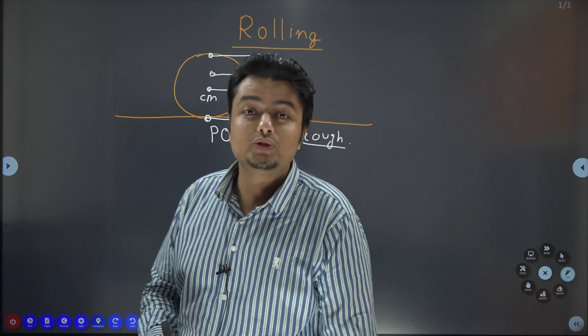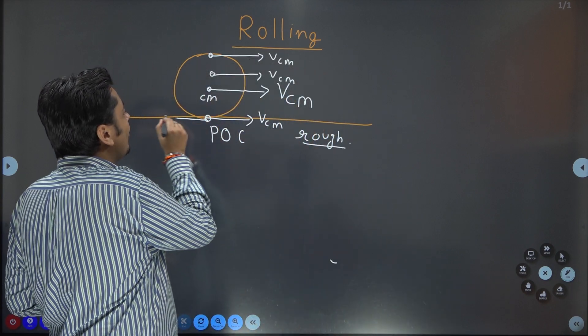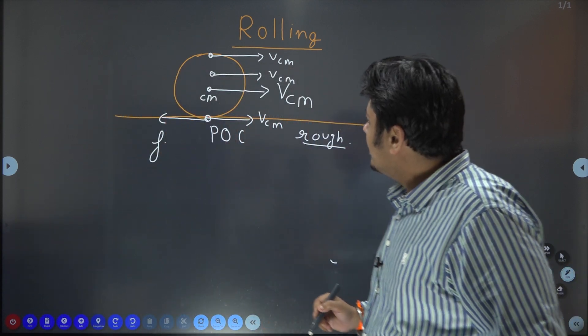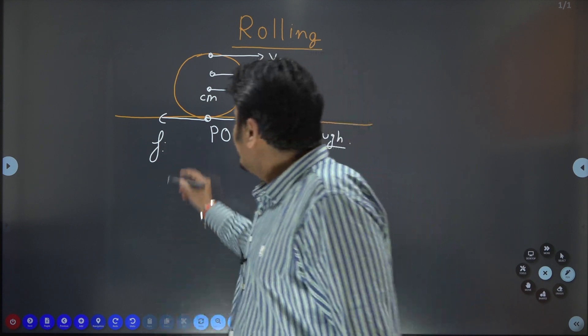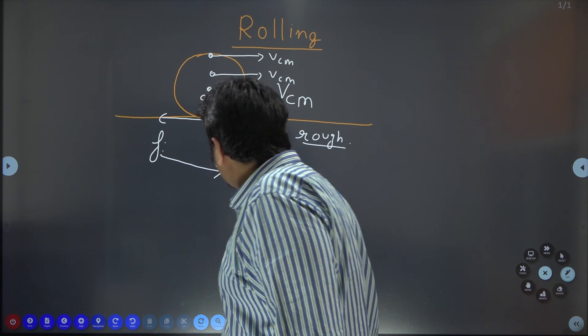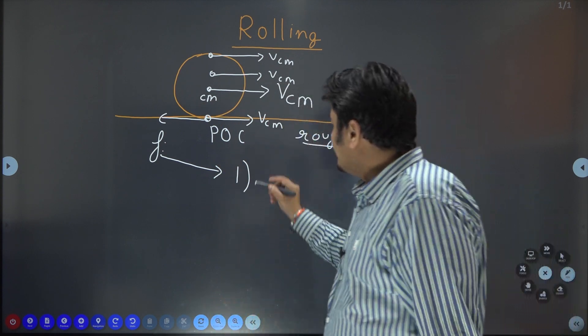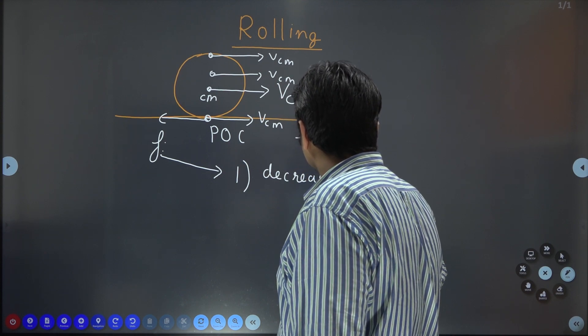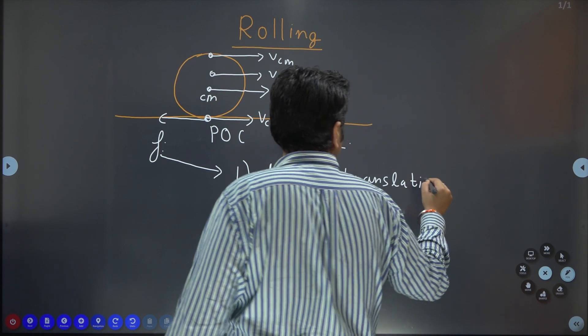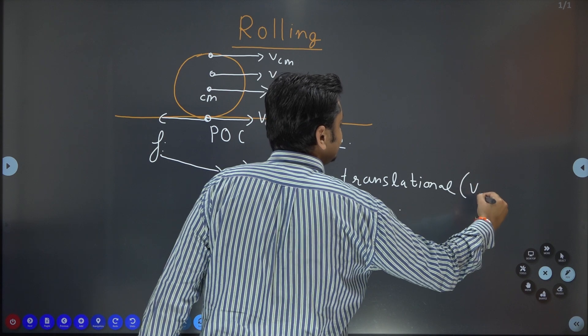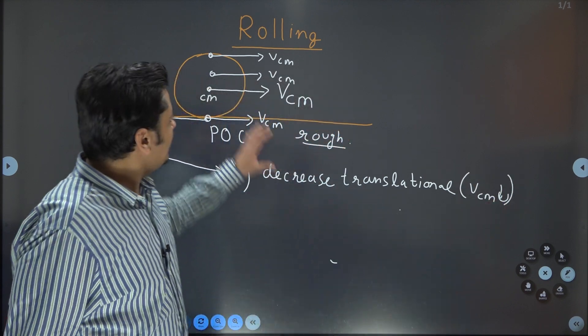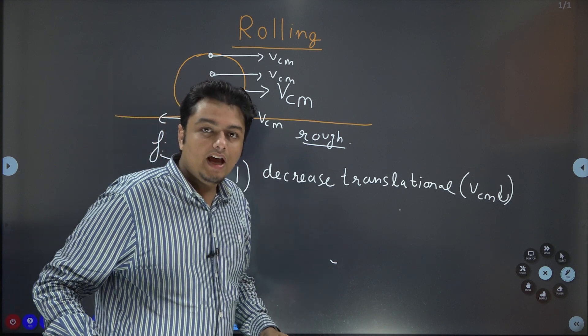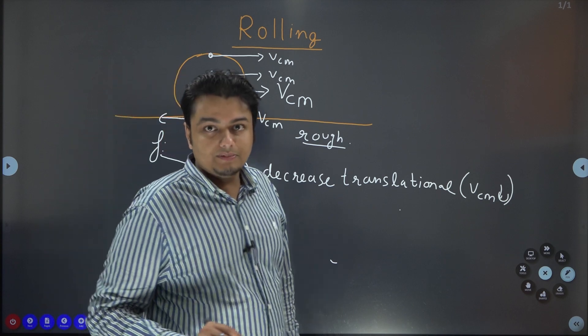What friction will do students? Friction will be obviously opposing this, friction opposes relative motion. This will perform two jobs here. It will decrease translational motion and by that I am meaning that VCM would decrease. Obviously, consider only the translational motion of this object, force in the horizontal direction is only friction and friction will definitely deaccelerate this object. So, VCM is going to decrease.